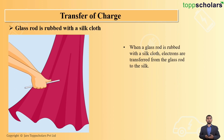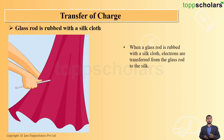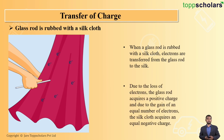Suppose a glass rod is rubbed with a silk cloth. When a glass rod is rubbed with a silk cloth, electrons are transferred from the glass rod to the silk. The silk will be negatively charged and the glass rod becomes positively charged. Due to the loss of electrons, the glass rod acquires a positive charge, and due to the gain of an equal number of electrons, the silk cloth acquires an equal negative charge. The negative charge here is 6 and so is the positive charge — it has to be equal.